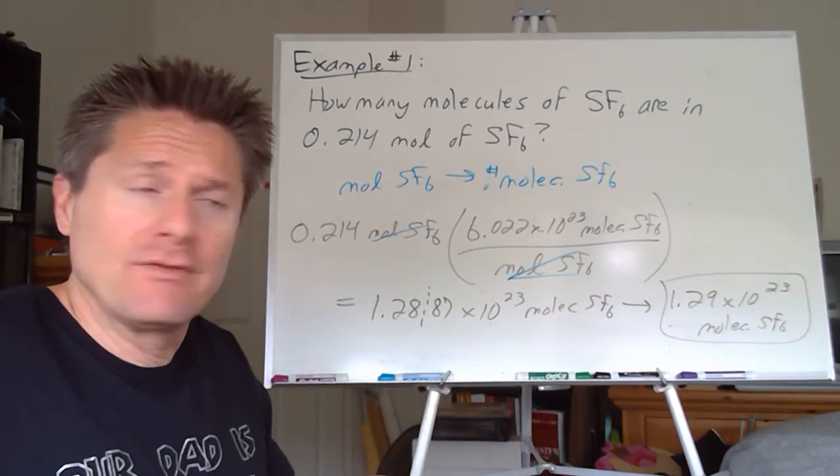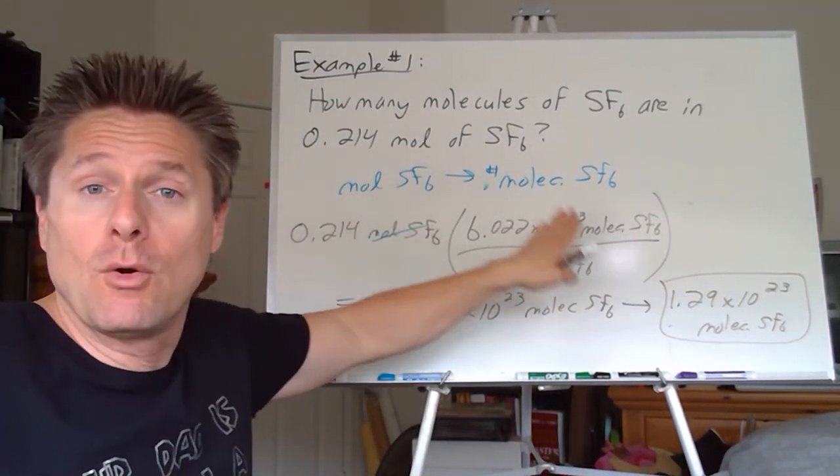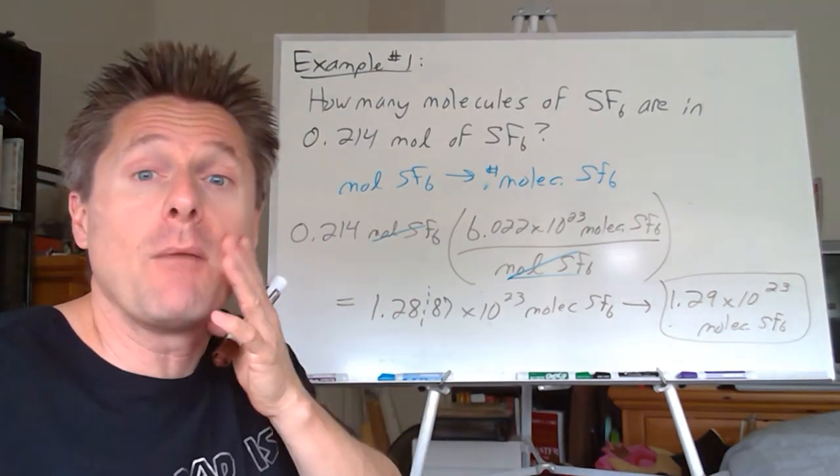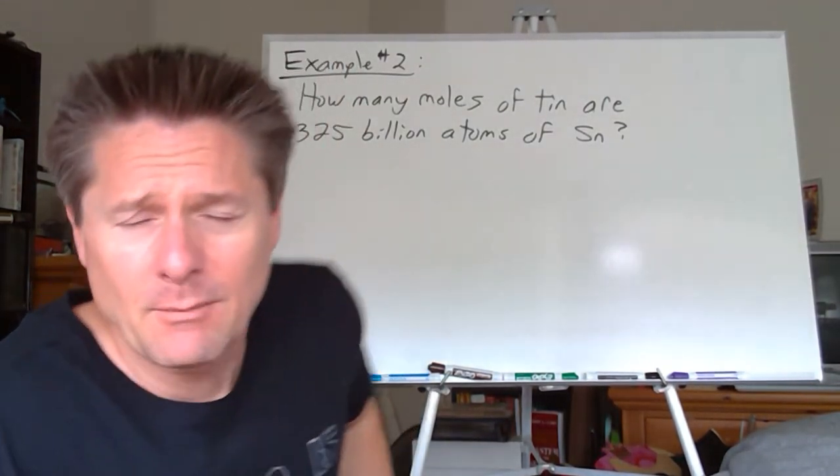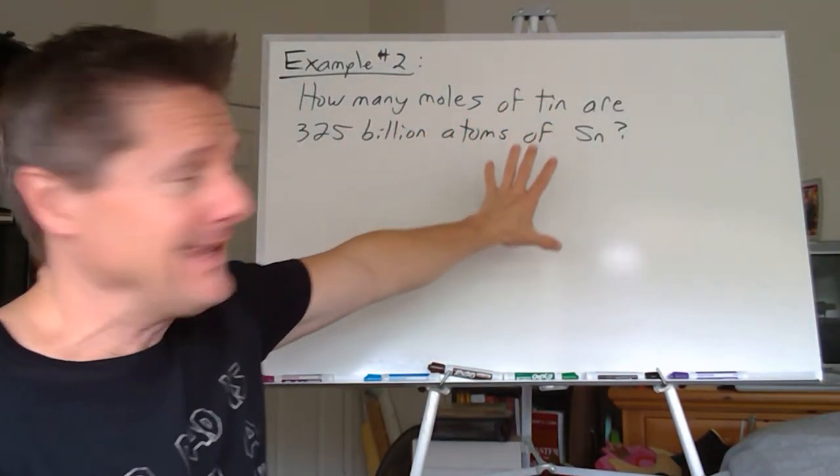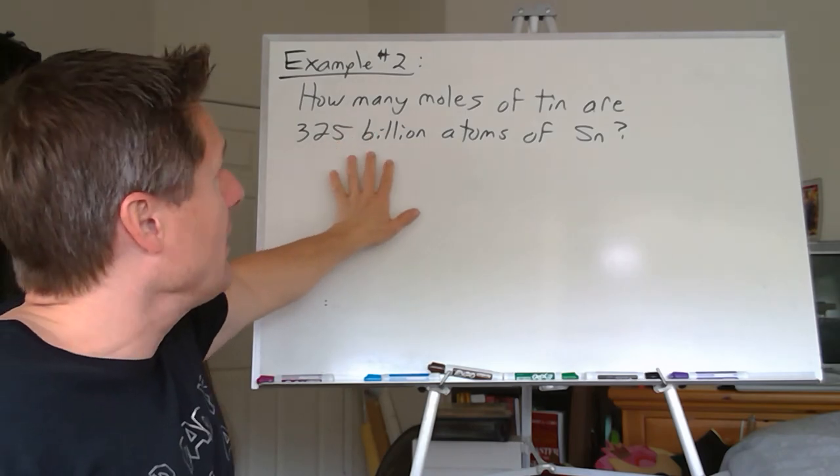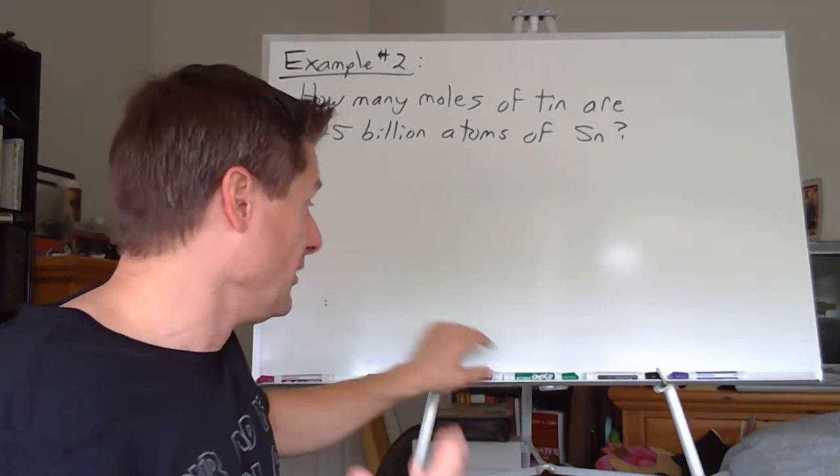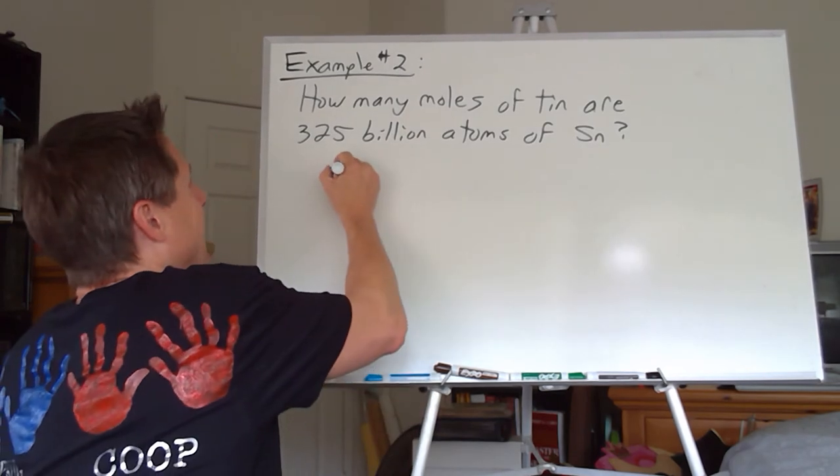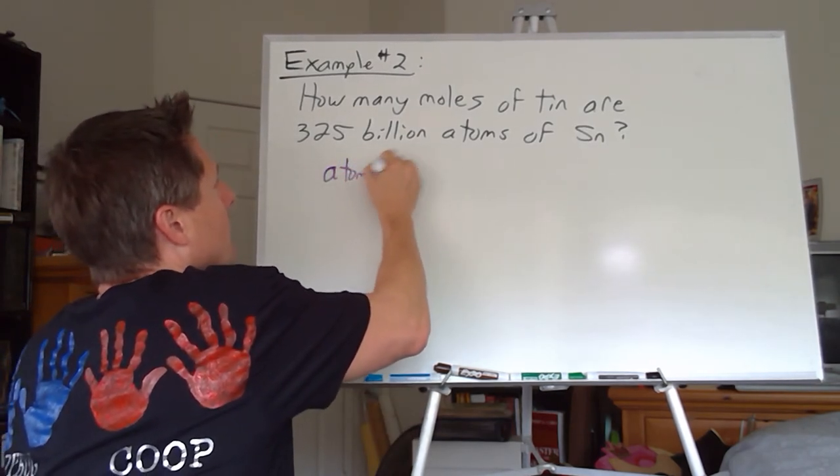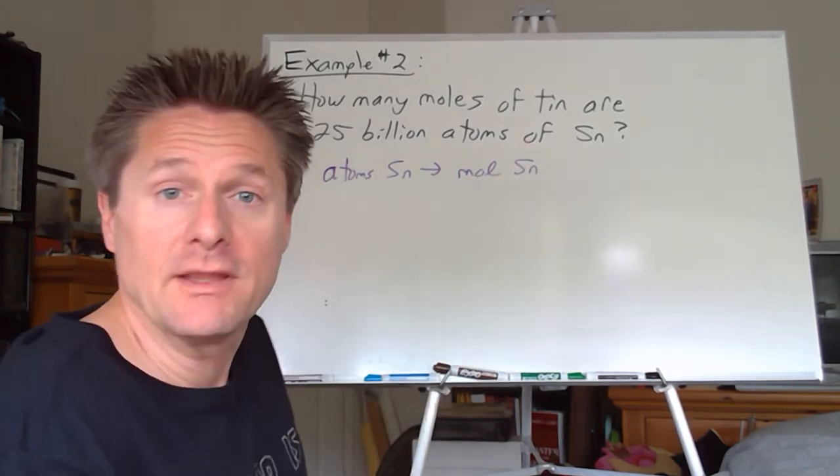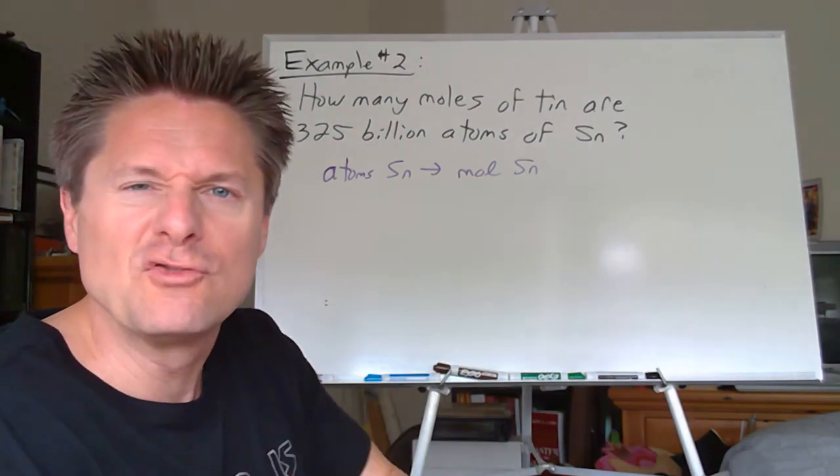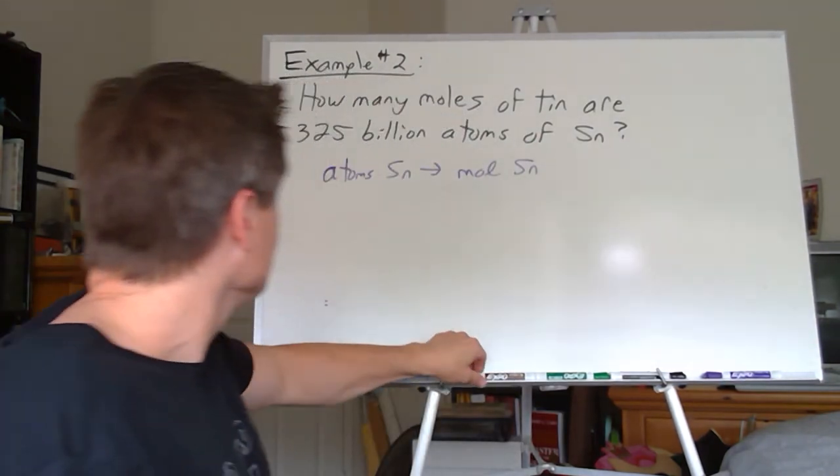I mean, it's actually very simple math. You just got to think of it like you would any other conversion. Let's do one more example. We'll call it a day for this video, but let's flip it. Instead of starting with moles and going to number of particles, let's take a number of particles, whether they're atoms, ions, or molecules, and convert that to moles. That is going to be very common for you to do. Another simple one for you. How many moles of tin are in 325 billion atoms? So we've got 325 billion atoms of tin. How many moles of tin would that be? Simple one-step problem, but it's backwards from what we did before. So we're taking atoms of tin and converting that to moles of tin, using Avogadro's constant as a conversion factor.